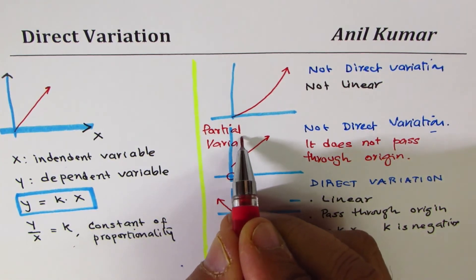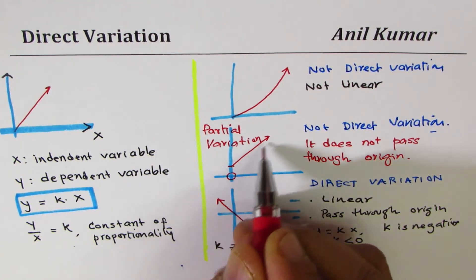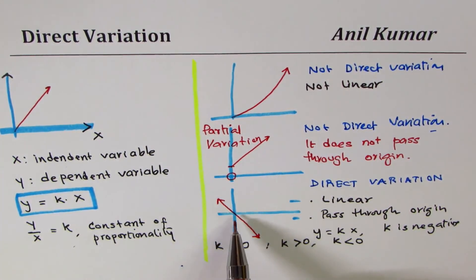Here there's a fixed cost and a rate. In direct variation there is no fixed cost or you can say it is zero. So that is how direct variation is linked with partial variation. The other term is partial not inverse, so don't get confused with that.